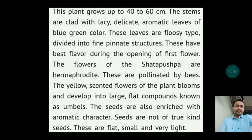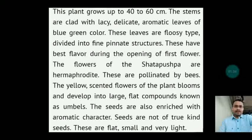Regarding the habit of the drug, this plant grows up to 40 to 60 centimeters. The stems are clad with delicate aromatic leaves of blue-green color. These leaves are furcate, divided into fine pinnate structures and have the best flavor during the opening of the first flower. The flowers of Satapuspa are hermaphrodite and are pollinated by bees. The yellow scented flowers bloom and develop into large flat compound structures known as umbels. The seeds are also enriched with aromatic character.